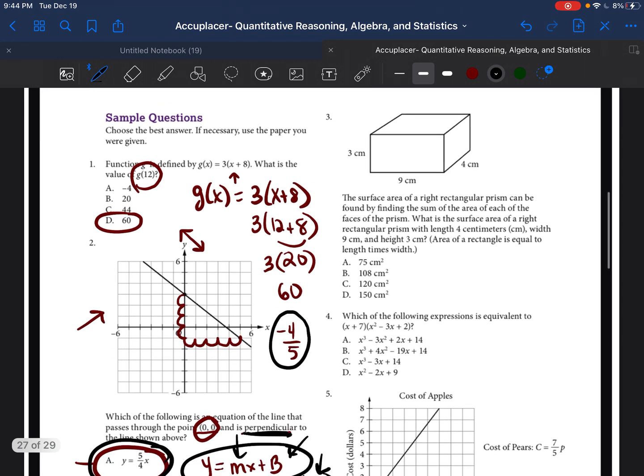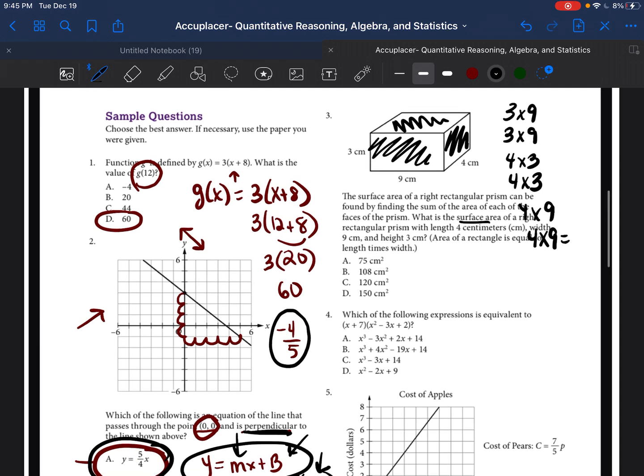It says the surface area of a right rectangular prism can be found by finding the sum of the area of each of the faces of the prism. Okay, so they're just asking us, can we find the total surface area? So we literally just have to find the area of each one of the sides. So remember that a rectangular prism has six sides, and each side has a double. So, for example, this front side, 3×9, has a back side that's 3×9. And so this side, which is 4×3, has a double on the other side, 4×3. And then the side on the top would be 4×9. And so that one also has a double on the bottom, which is 4×9.